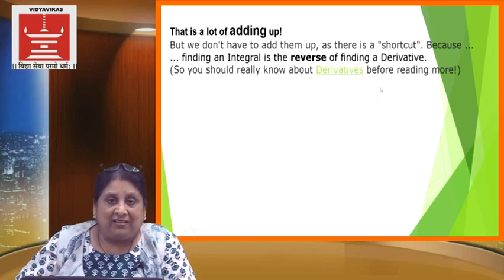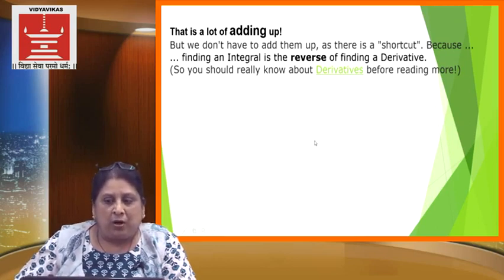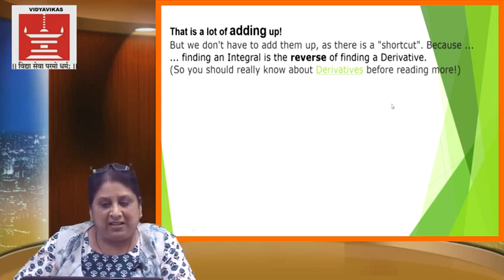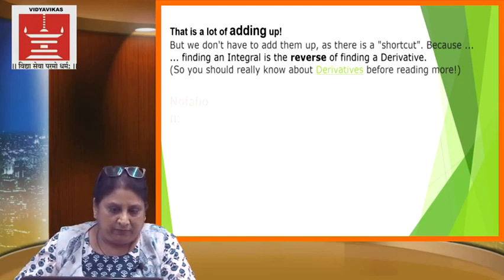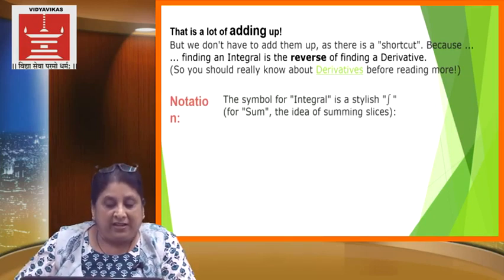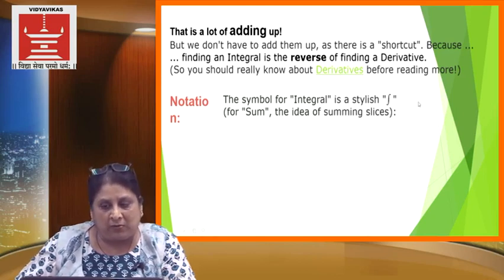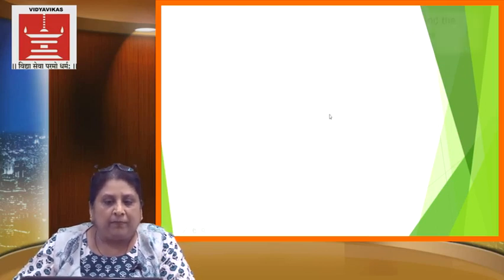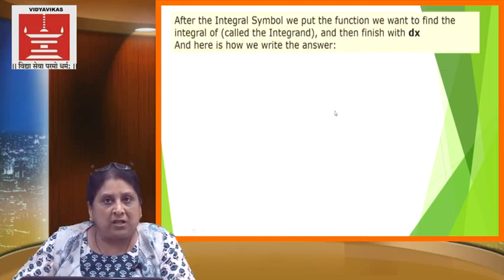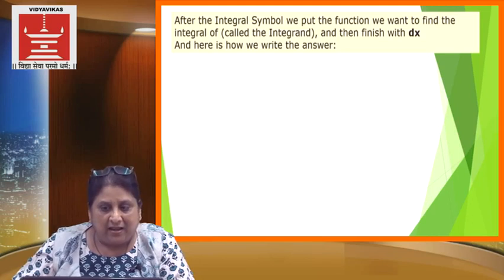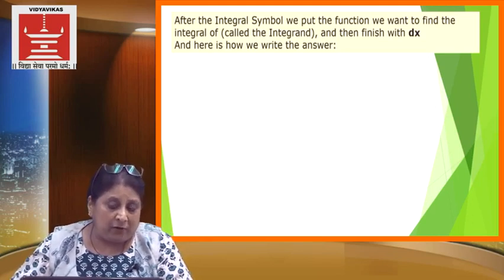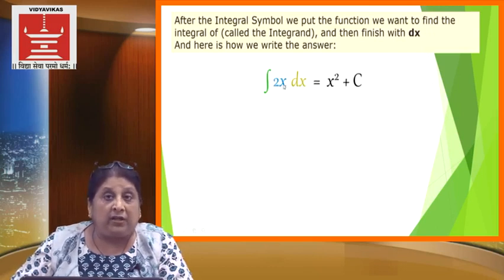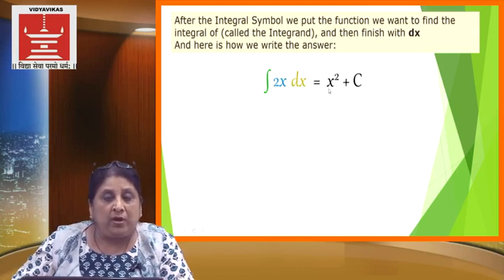What have I done? I have added the areas of the rectangles. So I use this idea of adding the areas of the rectangles — nothing but called the integral — that is the reverse of finding the derivative. Notation for integral: the stylish s — the normal English alphabet s is elongated and becomes the sign of the integral. After the integral symbol, we put the function that we want to find the integral of, called the integrand, and then finish with dx. This dx comes from the width of that rectangle. We write it as integral of 2x dx is equal to x square plus c.